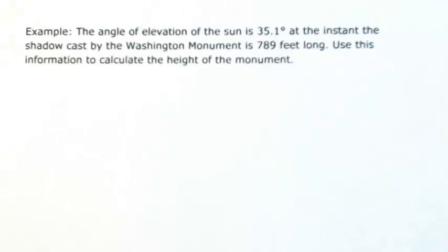The angle of elevation of the sun is 35.1 degrees at the instant the shadow cast by the Washington Monument is 789 feet long. Use this information to calculate the height of the monument.